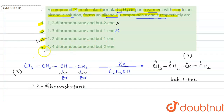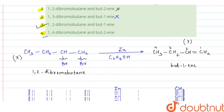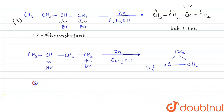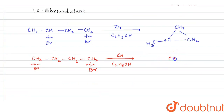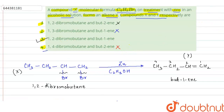Option 4 gives 1,4-dibromobutane. Its structure is: CH₂Br-CH₂-CH₂-CH₂Br. When treated with zinc and C₂H₅OH, again ring formation takes place — one bromine leaves from each end and a four-membered ring is formed: CH₂-CH₂-CH₂-CH₂. So option 4 is also wrong.